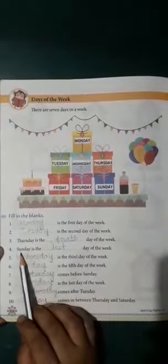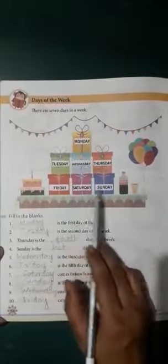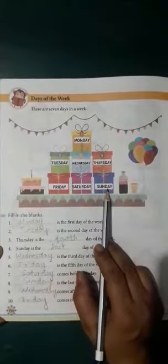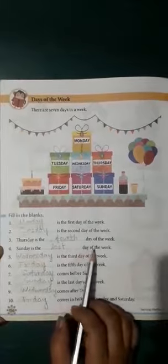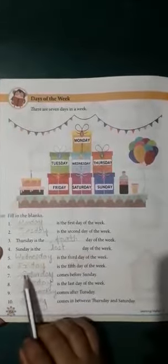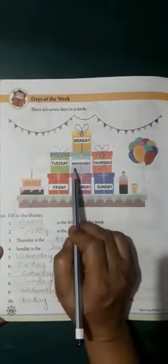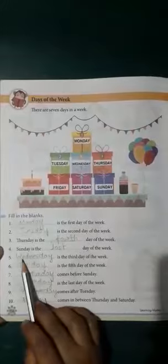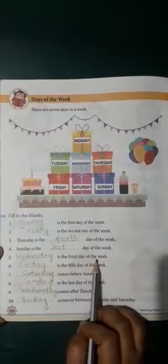Sunday is the third day. Sunday is the third day of the week. Wednesday is the third day of the week.